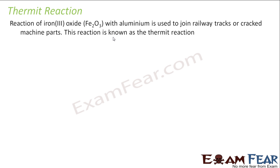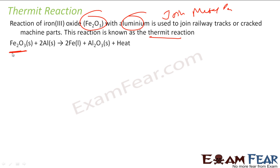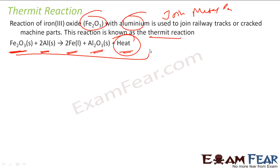We will now discuss a new type of reaction called the thermite reaction. The reaction of iron oxide with aluminium to join railway tracks is generally called the thermite reaction. They are used to join metal parts. In this case, you have iron oxide, you have aluminium, you get iron and Al₂O₃ and heat. It generates heat which melts the metal and the metal parts are joined.